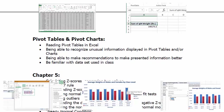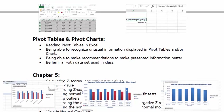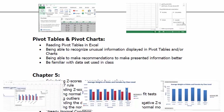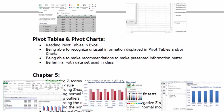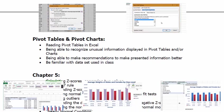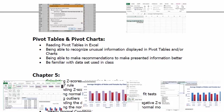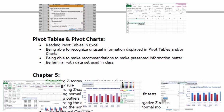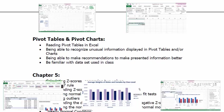Know what can be done — how we read pivot tables into Excel, being able to recognize unusual information being displayed in pivot tables or charts. That mainly goes with being able to read one and understand how the information is being presented, being able to make recommendations to make presented information better, and knowing what elements can be added to a pivot chart and what changes could be made.